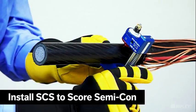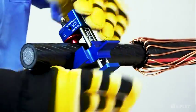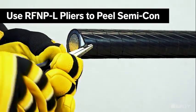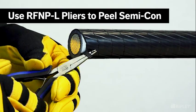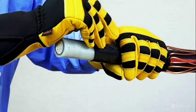Install a semi-con scoring tool, such as the SCS, onto the cable to score the semi-con layer. Use a pair of flat-nose pliers, such as the RFN-P-L, to begin peeling away the semi-con and exposing the insulation.